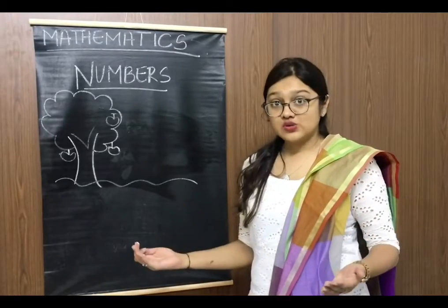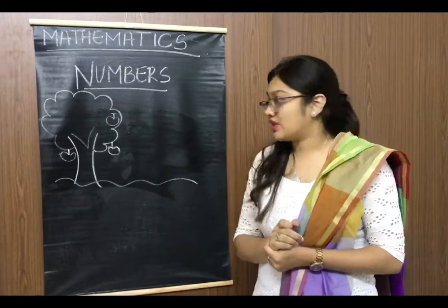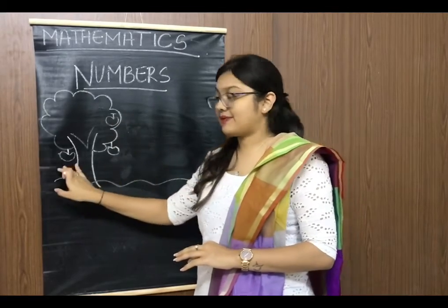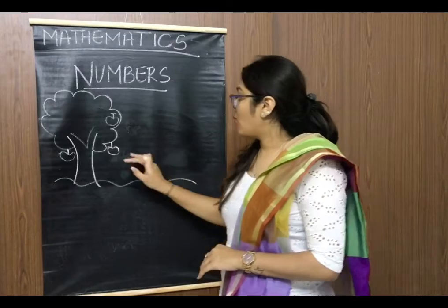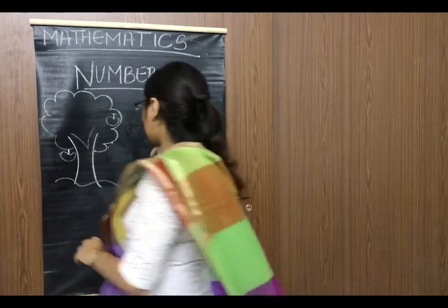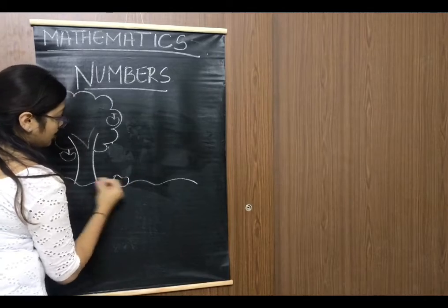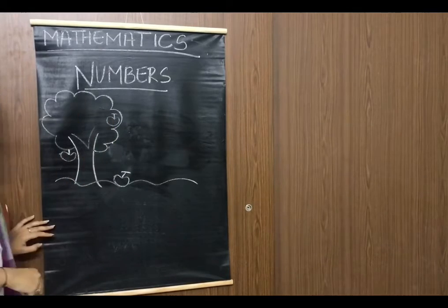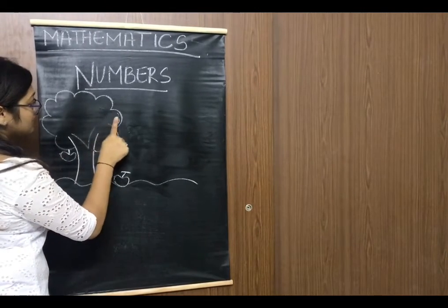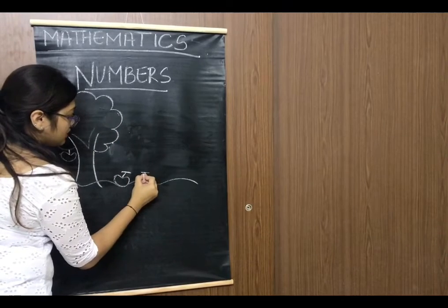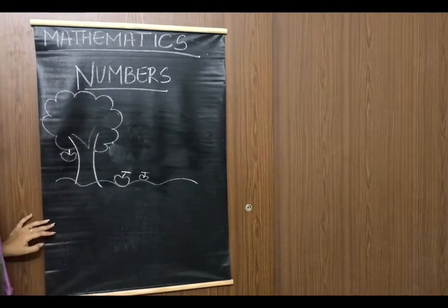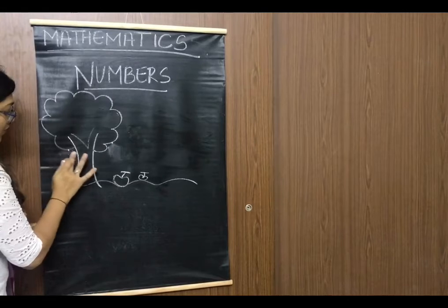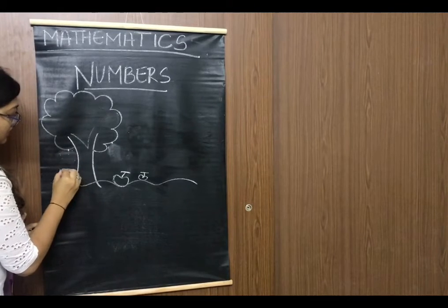So students, this is one more example. This is an apple tree. There are three apples in the tree. One apple falls down from the tree. So how many apples are left? One. One more apple falls down from the tree. So how many apples are left? One. One more apple falls down from the tree.